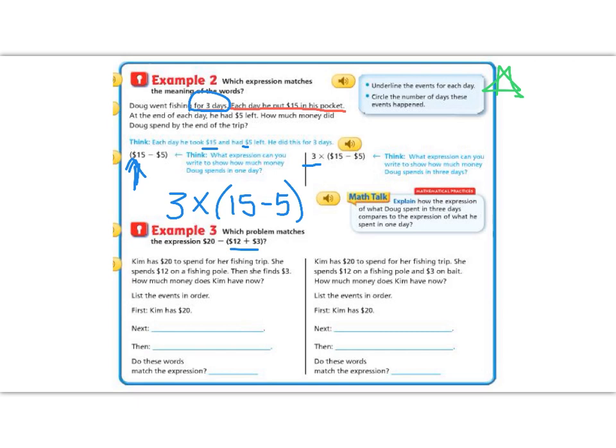Okay. In order to figure out what happened, let's list the events in order. First, Kim has $20. Then she spends, reading from the question, she spends $12. Well, spend sounds like a subtract. Then she finds $3. Finds $3. And that's an add. And if we look back to our expression, we're going to subtract the 12, but we're going to add the 3. So do these words match the expression? No.